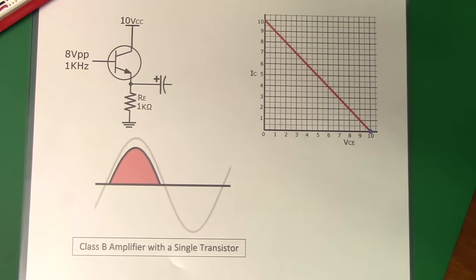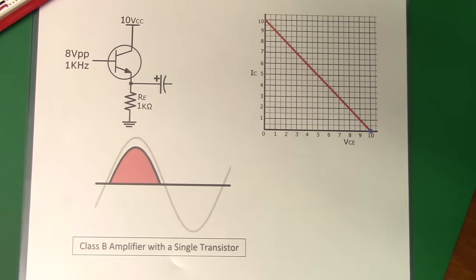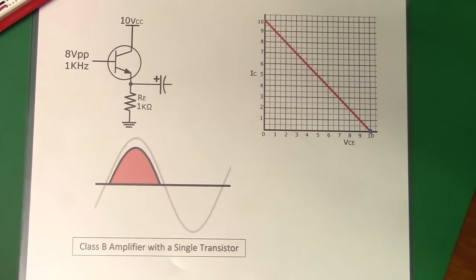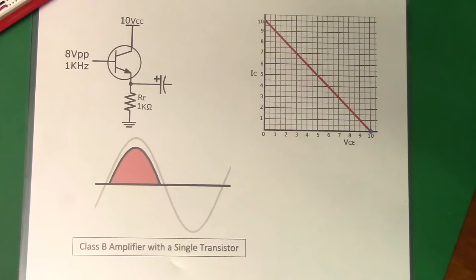The last two videos covered Class A amplifiers and their efficiency. We talked about the capacitive coupling of a Class A amplifier, in which we could get only a maximum 25% efficiency, and also the transformer-coupled Class A amplifier, in which we were able to get just about 50% in a theoretical value, but in practice of course it's going to be quite a bit less. This time around, we are going to talk about Class B and Class AB amplifiers, and with these we can get efficiencies of almost 79%.